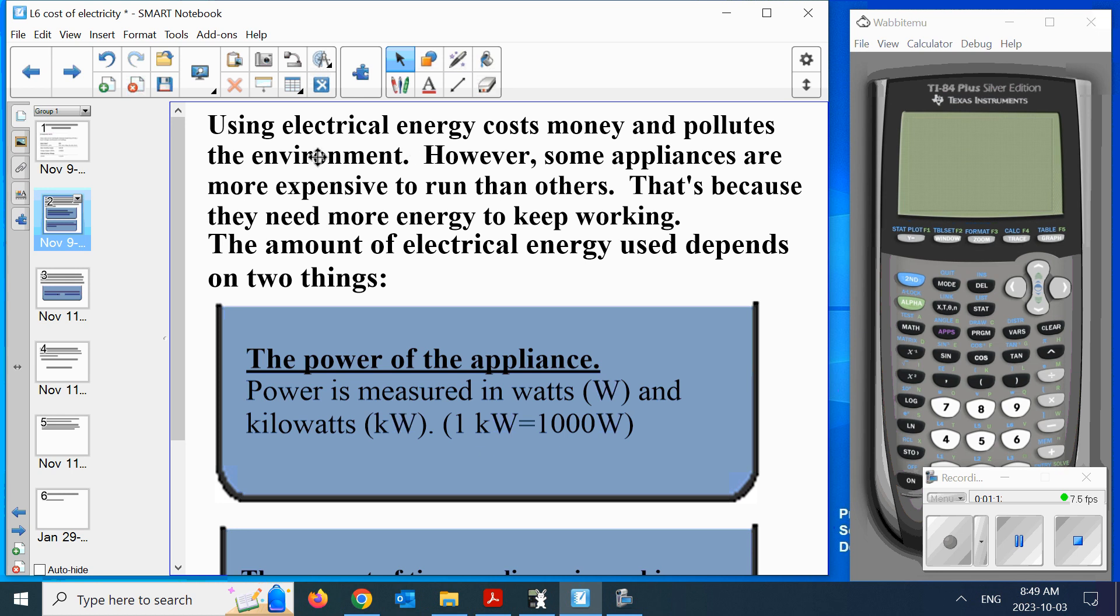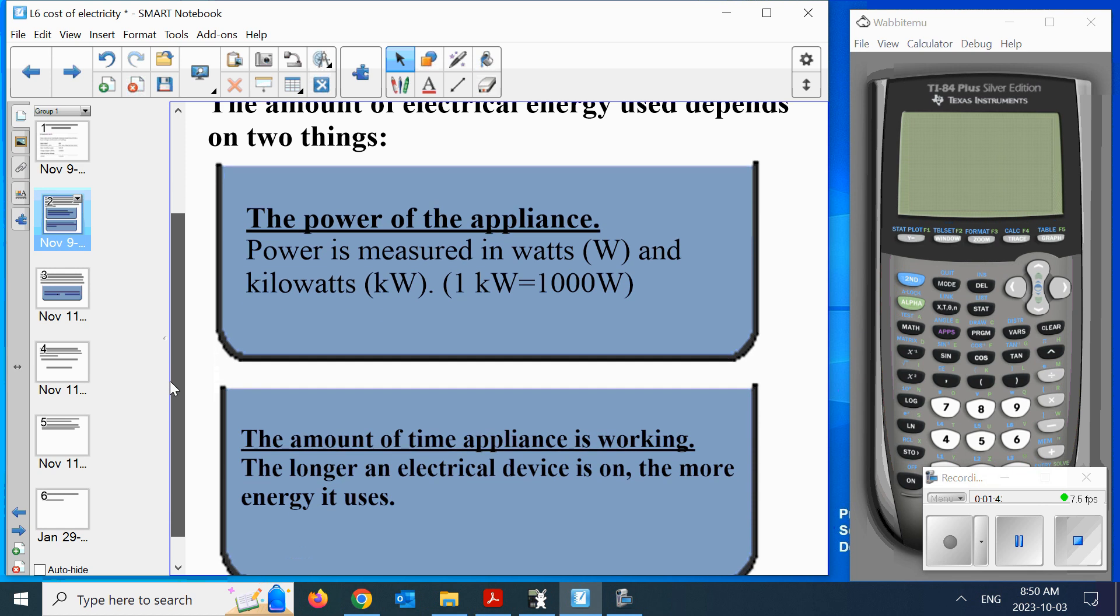Here's what we're going to talk about. Using electrical energy costs money and pollutes the environment. However, some appliances are more expensive to run than others. That's because they need more energy to keep working. The amount of electrical energy used depends on two things: the power of the appliance and the amount of time the appliance is working.